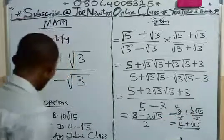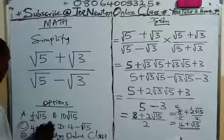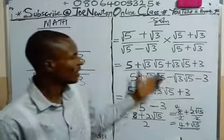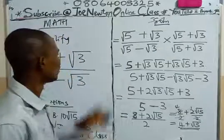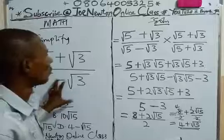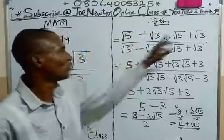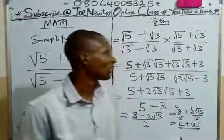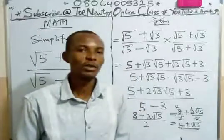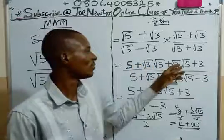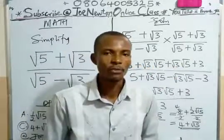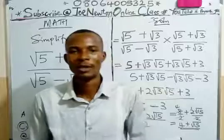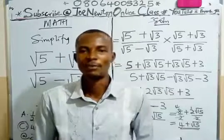Option C, which is 4 + √15, is the answer to this problem. To tackle challenges like this, just follow the rule. Remember the conjugate: if here is minus, you use plus. If here is plus, you use minus and multiply up and down. When you are multiplying, be mindful that when a surd multiplies itself, it gives you the perfect number. And when you have similar surds like this, you can add them together or subtract accordingly. Thank you for paying attention. For more of this, visit my YouTube channel at Joe Newton Online Class to enjoy mathematics and physics videos.